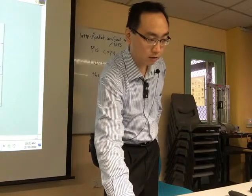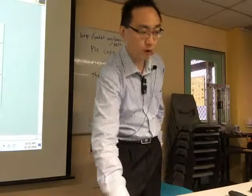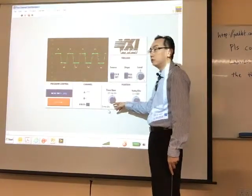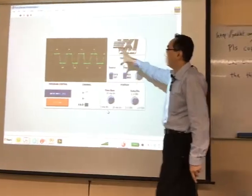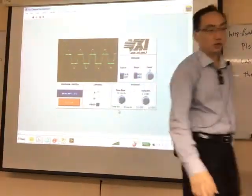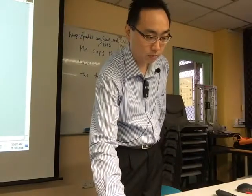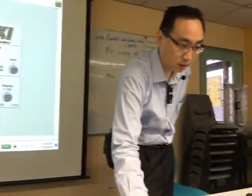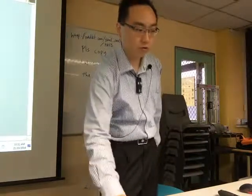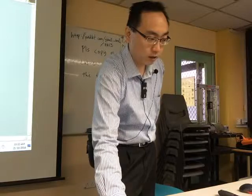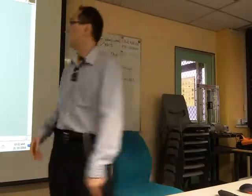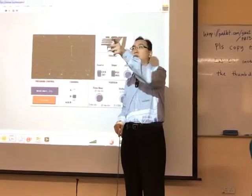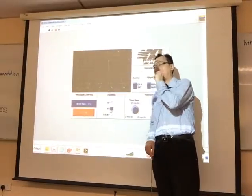Play around with the controls — adjust the time base, for example set it to 5 milliseconds or 20 milliseconds to display more waveforms. You can also adjust the vertical voltage scale. On your screen you can display one channel or both. Try exploring the different settings.